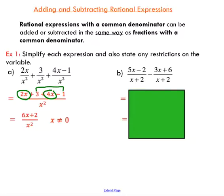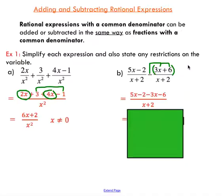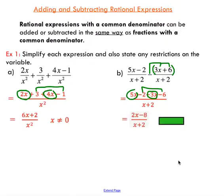Another example: I've got a common denominator, but in this situation I'm subtracting a binomial, so we have to put that binomial in brackets. The subtraction sign is going to alter the sign of both terms. Because I have a common denominator, I subtract straight across — putting the binomial in brackets forces me to change the sign of each term. I collect like terms: 5x and negative 3x. Note that x equals negative 2 would give division by zero, so that's a restriction.